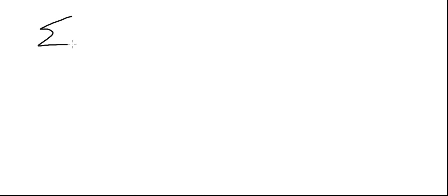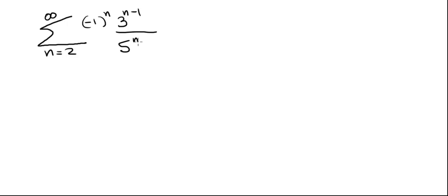We're going to take a look at the series from 2 to infinity: (-1)^n · 3^(n-1) divided by 5^(n-3). We want to know if this series converges or diverges, and if it converges, what does it converge to?